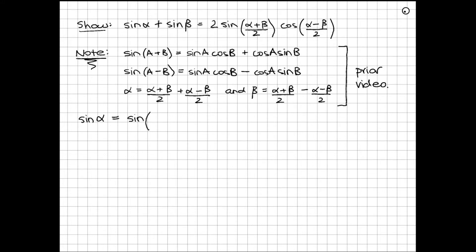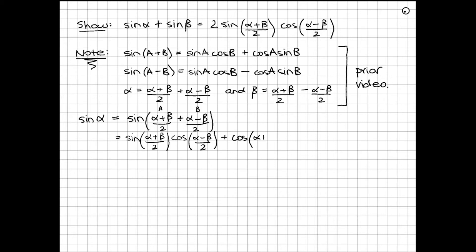So we'll have sine of (α+β)/2 plus (α−β)/2. Then we use our first compound angle formula, thinking of (α+β)/2 as our capital A and (α−β)/2 as our capital B, so that whenever we see capital A we put (α+β)/2, and whenever we see capital B we put (α−β)/2. This gives us sine of (α+β)/2 times cosine of (α−β)/2 plus cosine of (α+β)/2 times sine of (α−β)/2. And that's our expanded form of sine alpha.